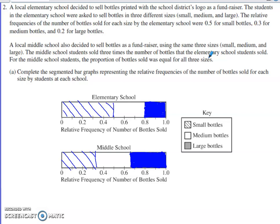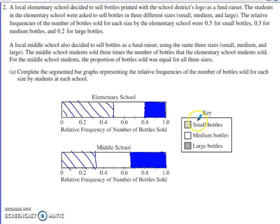Part A asks us to complete the segmented bar graphs representing the relative frequencies of the number of bottles sold for each size by students at each school. We've got an elementary school segmented bar graph and a middle school segmented bar graph. They've already developed the key for us, using diagonal lines to show the small bottle portion, blank for medium, and shaded in entirely for large.